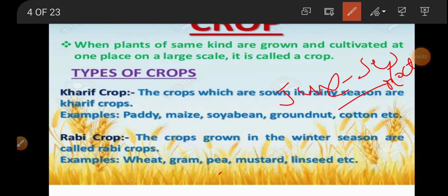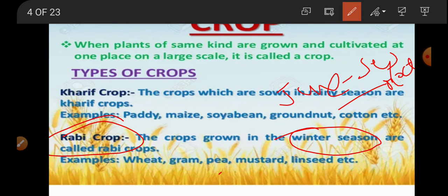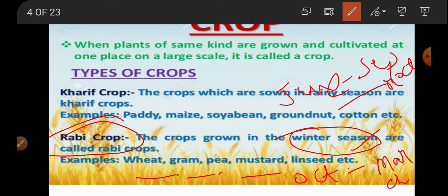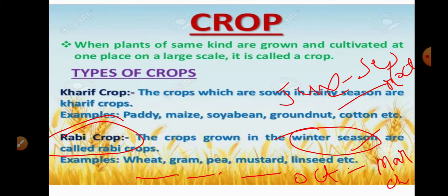The second type of crops is Rabi crops — the winter season crops. These are crops grown in the winter season, like wheat, gram, peas, and mustard. The sowing of seeds starts from October, and harvest is done in the month of March or April. So based on climatic conditions, we divide crops into two categories: Kharif crops and Rabi crops.